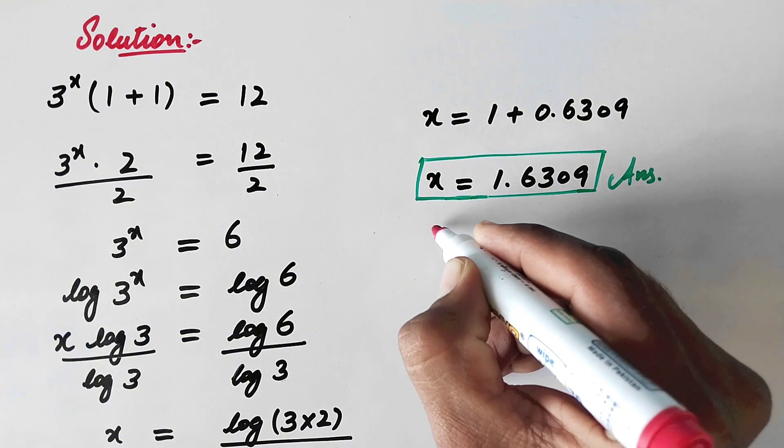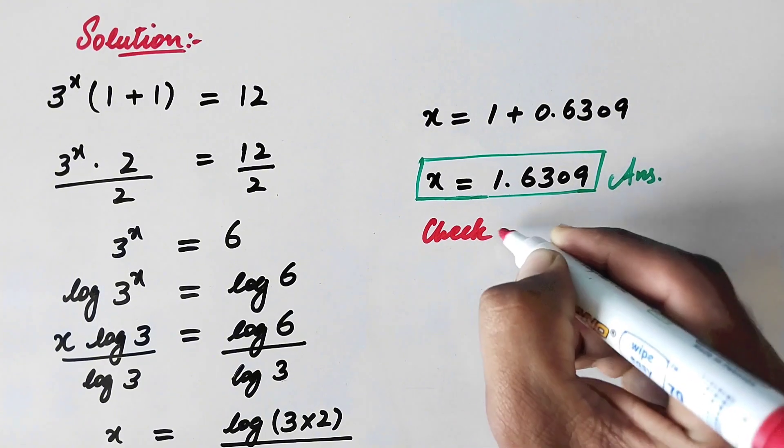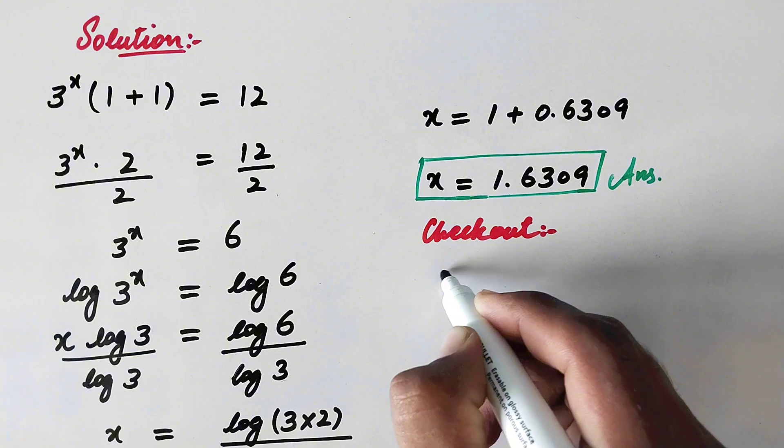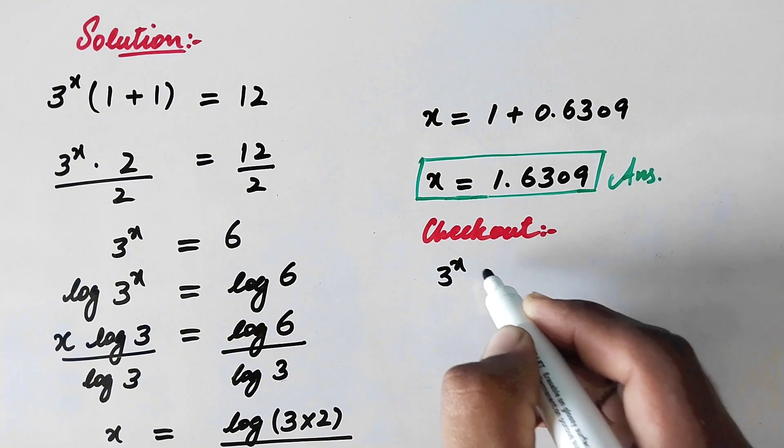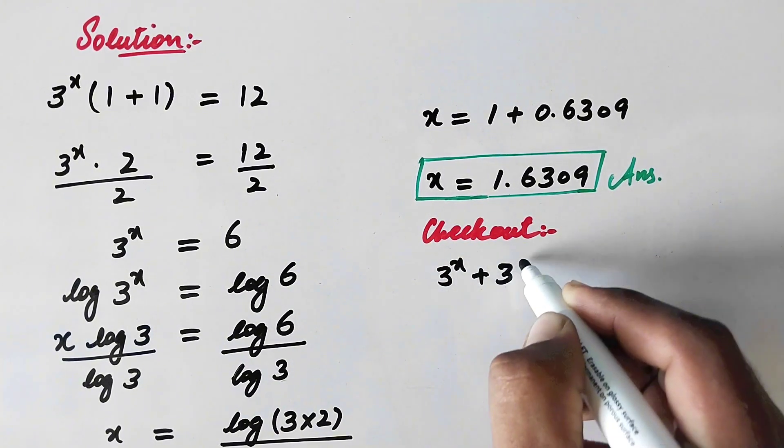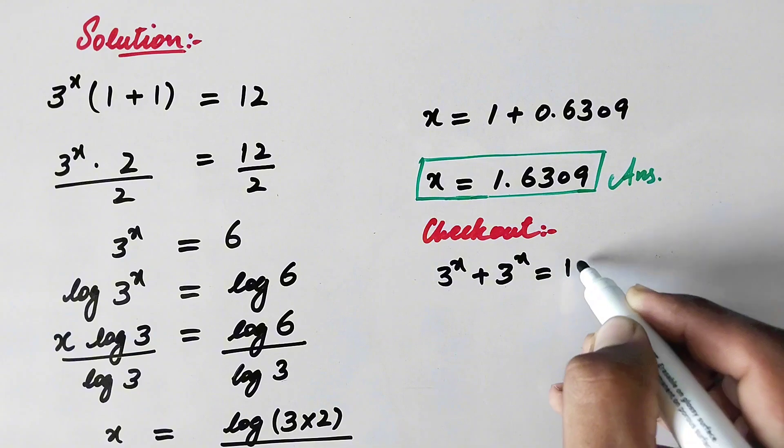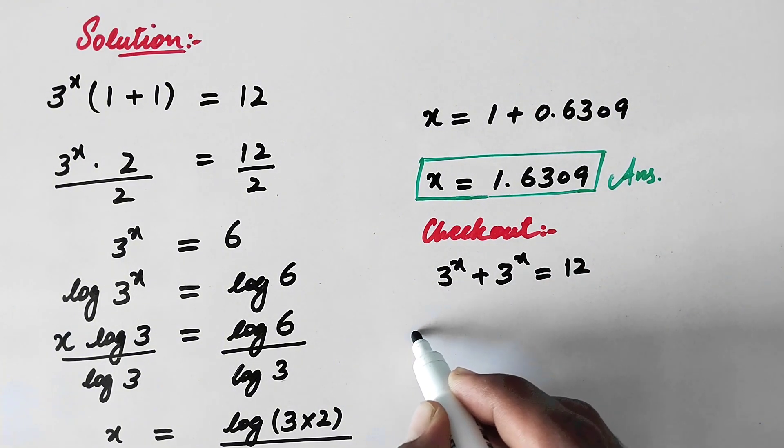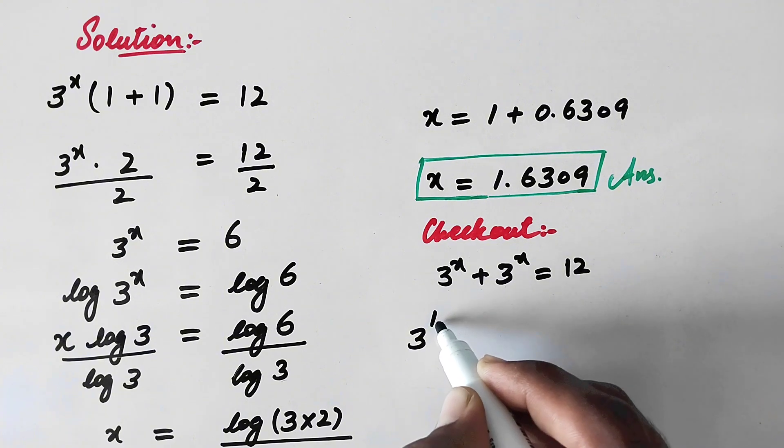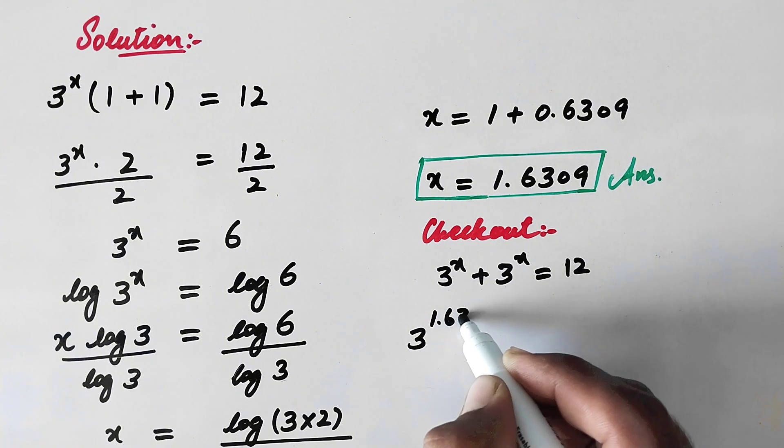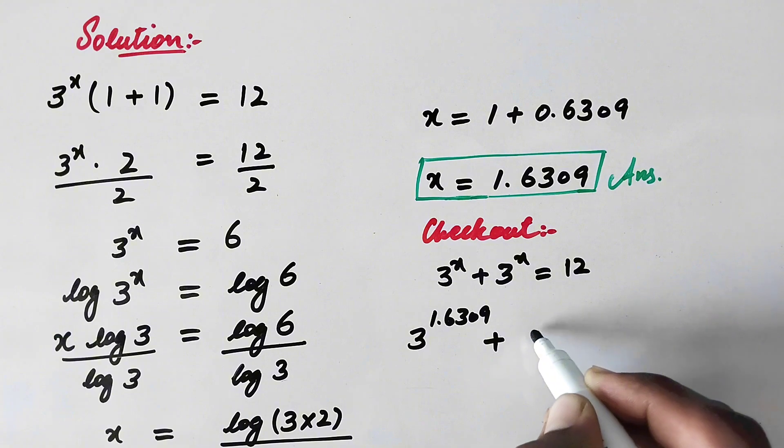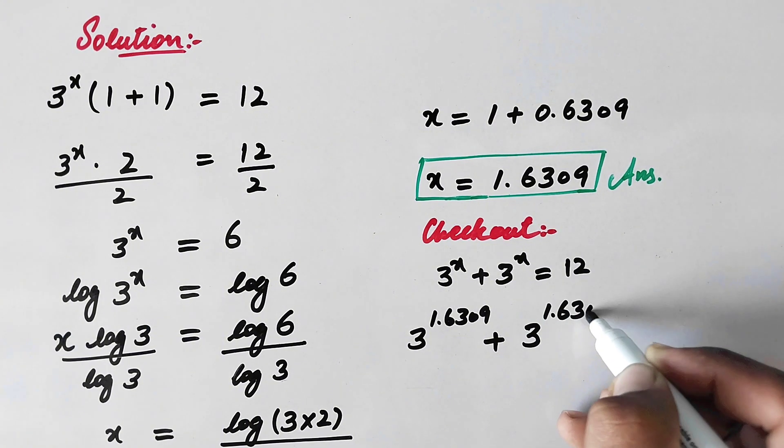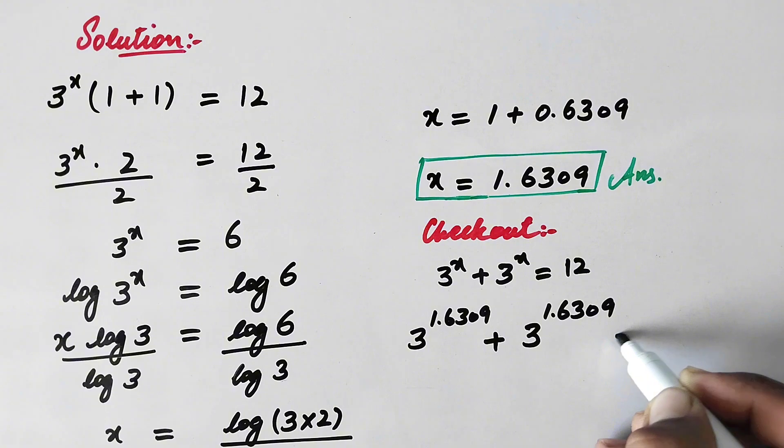And now let's verify our answer. So here we will write our original equation: 3 to power x plus 3 to power x equals 12. By putting the value of x, here will be 3 to power 1.6309 plus 3 to power 1.6309.